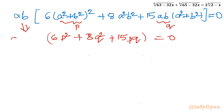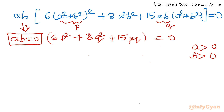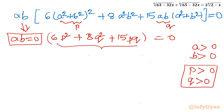From the factored form we get either ab equal to zero, or 6p² plus 8q² plus 15pq equal to zero. Since a and b are both positive, p (which equals a² plus b²) is positive and q (which equals ab) is positive. This second equation with all positive coefficients can only yield negative solutions for p and q, so we reject it. Therefore we accept only the solution ab equal to zero.